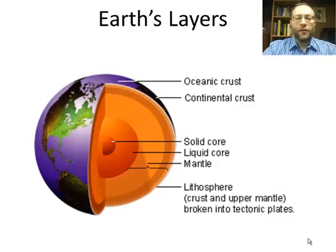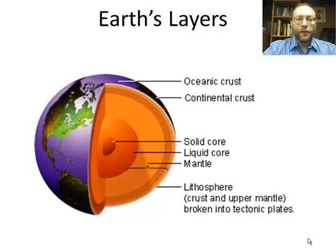First, you need to know about the Earth's layers. The thickness of the Earth, going from the center to the surface, is about the same as the width of the continent of the United States, going from Maine to California. Going from the surface to the center, we have the crust, and there are two types: oceanic crust and continental crust. The oceanic crust is thinner and denser than the continental crust.